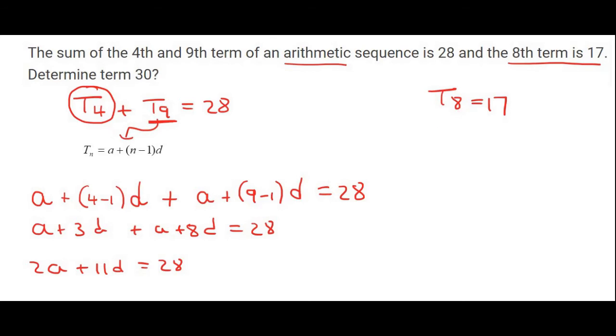We now go to our other equation which tells us that term 8 is equal to 17. And so that means 17 is going to be equal to A plus 8 minus 1 times D. So 17 equals A plus 7D.